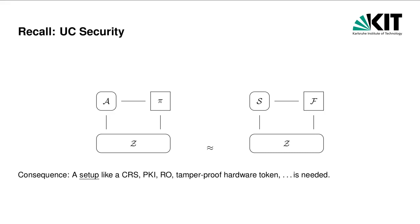Instead, it is necessary to give the simulator some advantage over the adversary. With UC security, this can be done by using a setup like a common reference string, a public key infrastructure, a random oracle, or some temporary hardware token. As the simulator controls the setup, it can embed a trapdoor which helps its simulation but does not help corrupted parties.